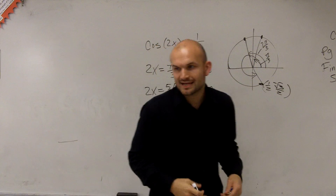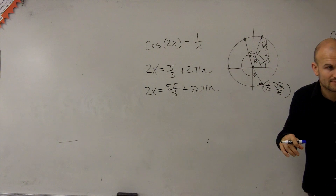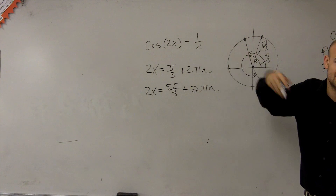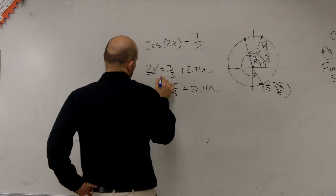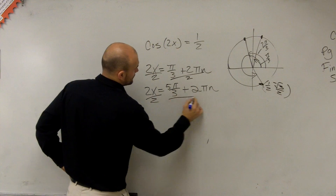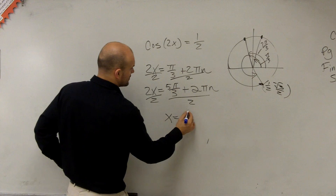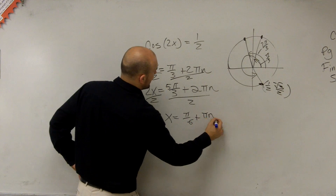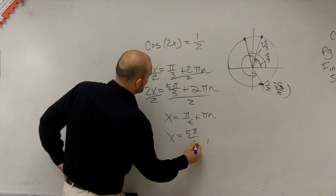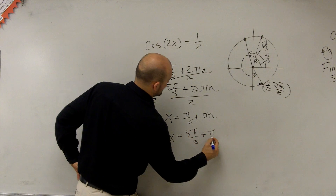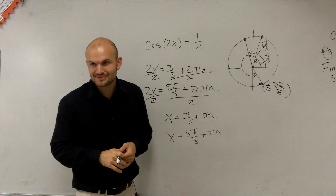We're solving not just for x, but we found out the argument is 2x, so we're solving for 2x, not just x. Now we need to divide everything by 2. Therefore, the final solutions are: x = π/6 + πn, and x = 5π/6 + πn.